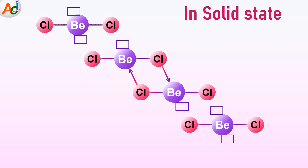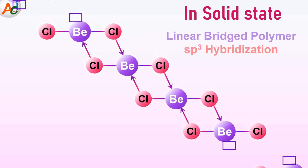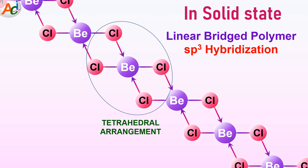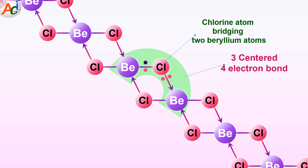It is evident that three bonds are formed by beryllium and its geometry approaches a nearly trigonal planar arrangement. However, it is still electron-deficient, requiring one more electron pair. As the temperature decreases further, polymerization is extended. The beryllium atom accepts one more electron pair to achieve the octet configuration, and this process is repeated with other beryllium atoms. This results in the formation of a linear bridged polymer in the solid state, accompanied by a change in hybridization to SP3. Now there are four bonds formed by the beryllium atom arranged tetrahedrally around it. It is quite interesting that the chlorine atoms act as bridges between two beryllium atoms, resulting in the formation of a three-centred four-electron bond.